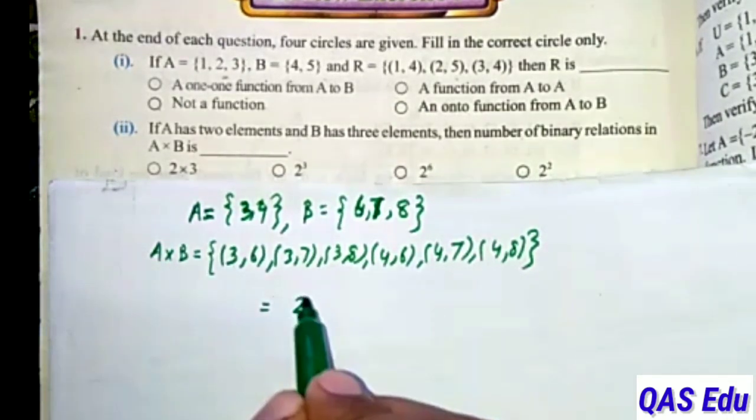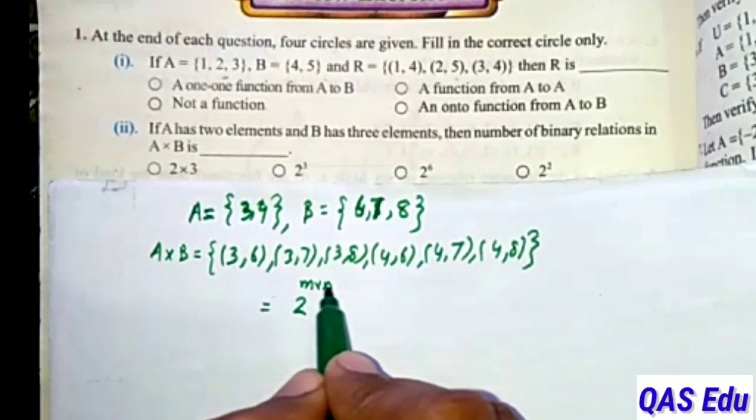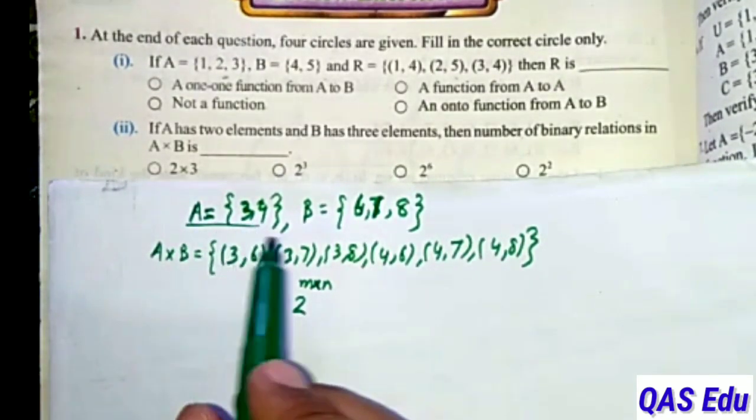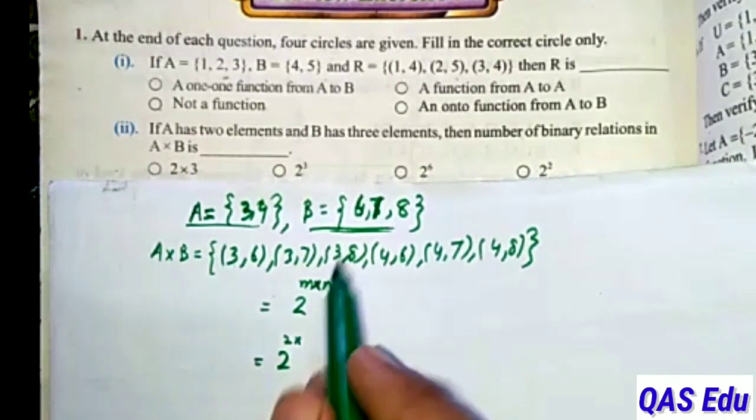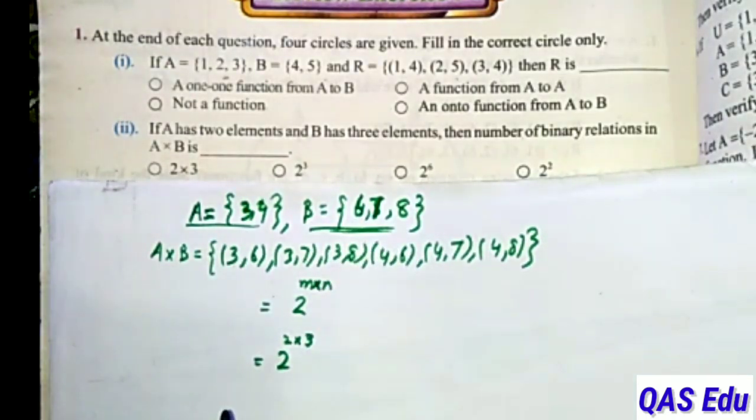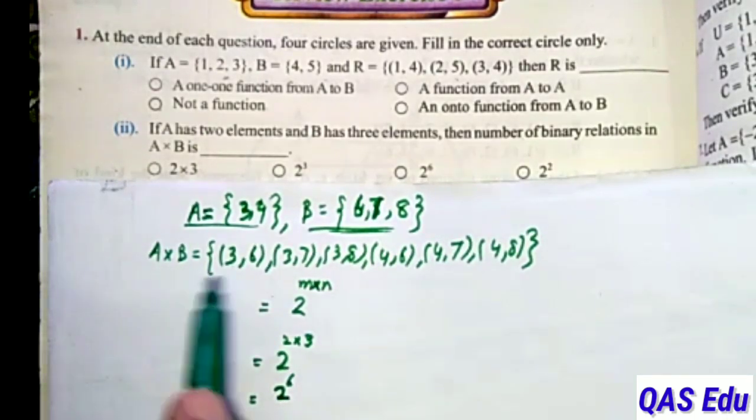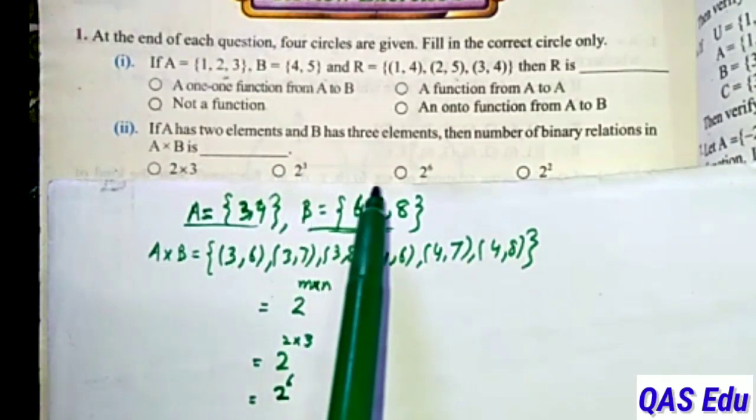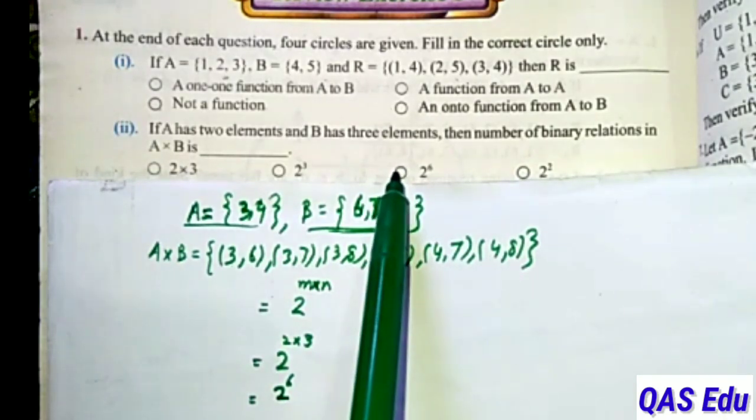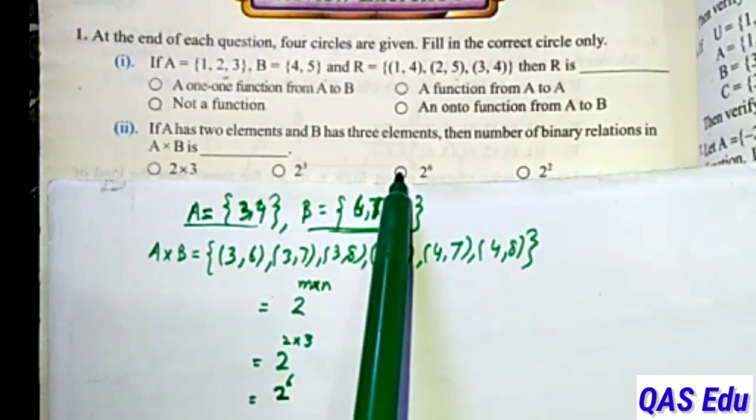The formula is: number of binary relations in A cross B is equal to 2 power M multiplied by N. M is the first set's elements, A has 2 elements. N is the second set's elements, B has 3 elements. So 2^(2×3) = 2^6. This is the correct option C, third option. Fill that circle.